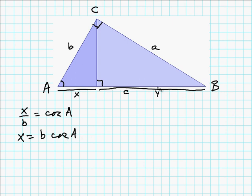What about Y? Well, for this angle B here, the adjacent over the hypotenuse, we would have Y over A is equal to the cosine of B. And from that, we could get Y is equal to A cosine B.